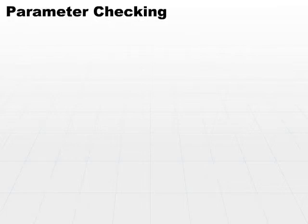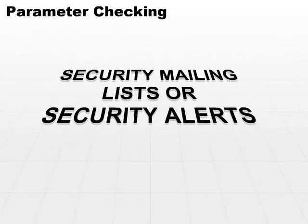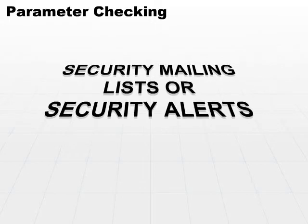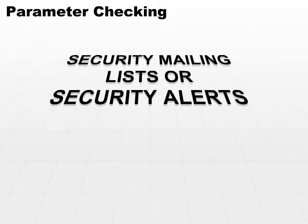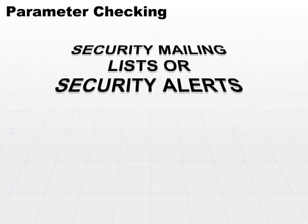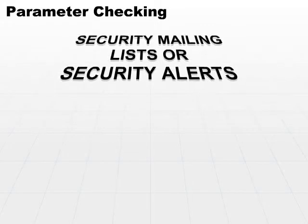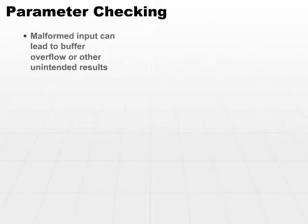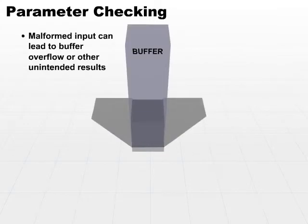Input and parameter checking is a huge common flaw. If you pay attention to security mailing lists or security alerts, you will commonly see — probably even at the frequency of multiple times per week, certainly multiple times per month — lots of errors that are patched and fixed because of a lack of input and parameter checking. Malformed input can lead to the dreaded buffer overflow or other unintended results.